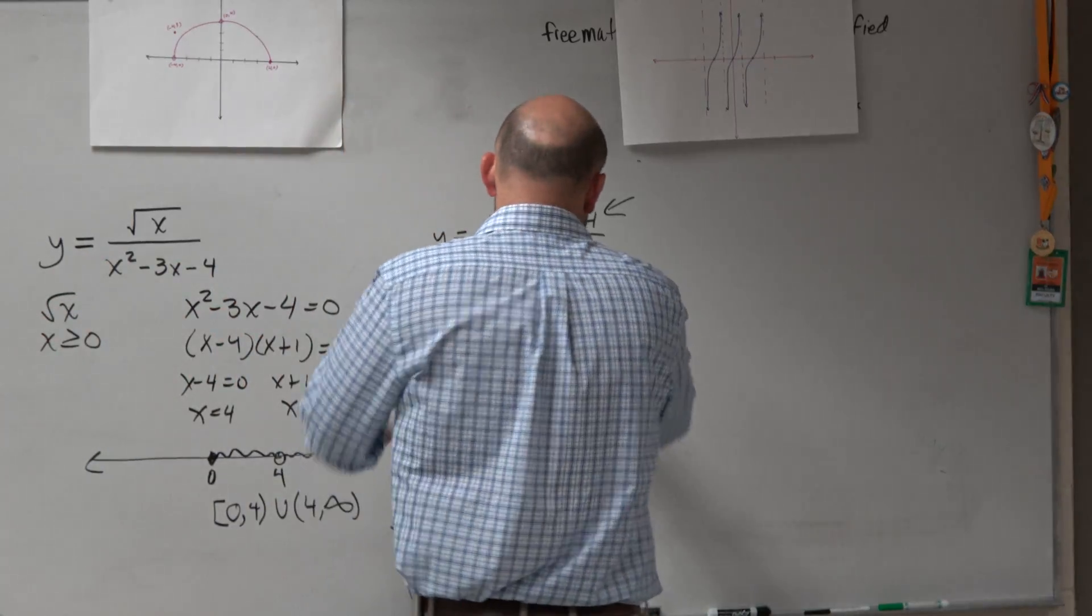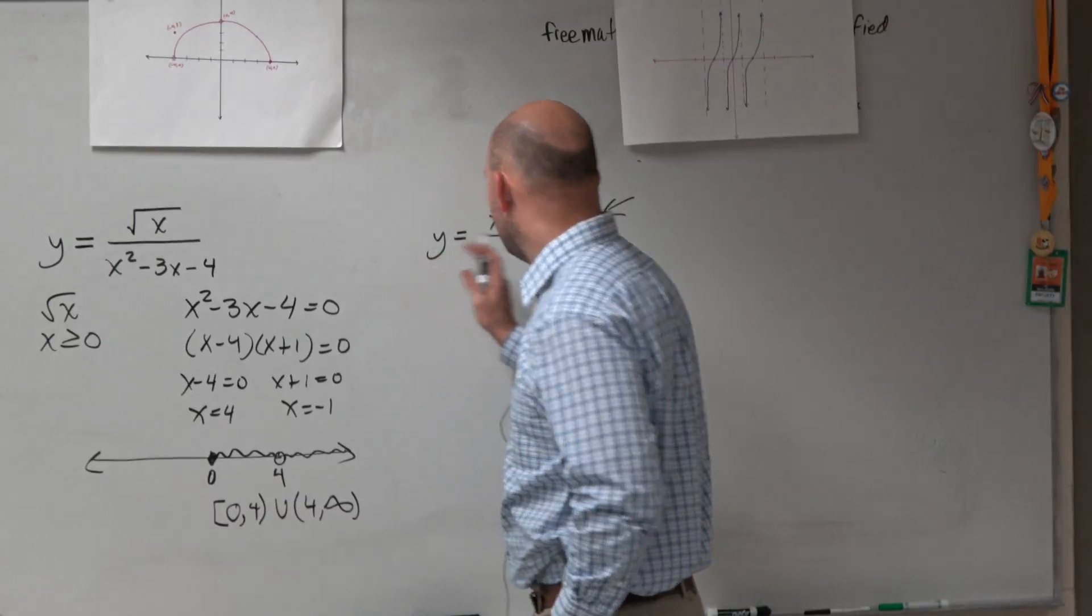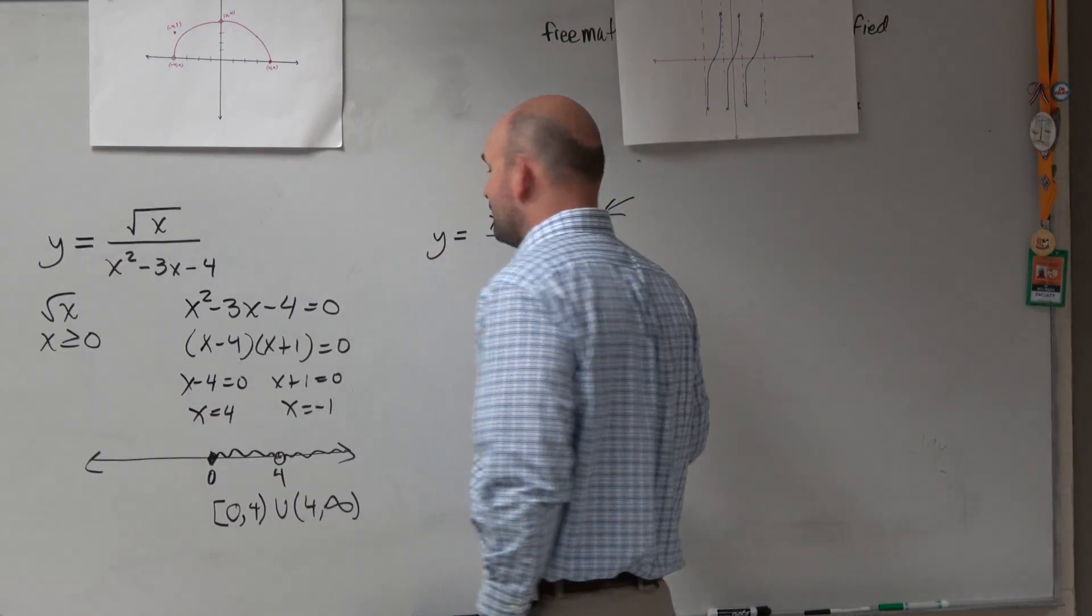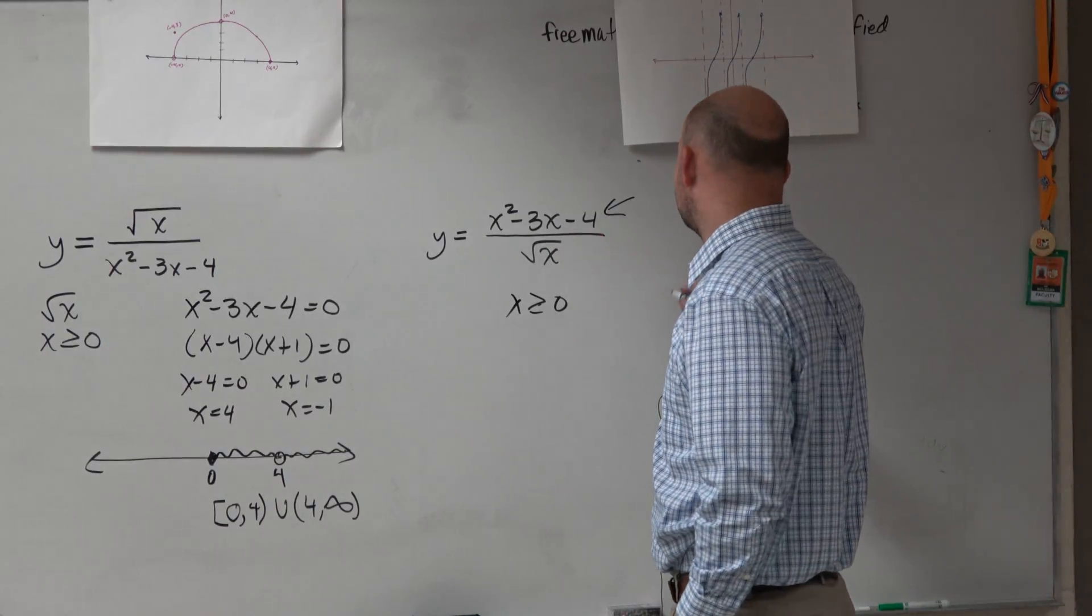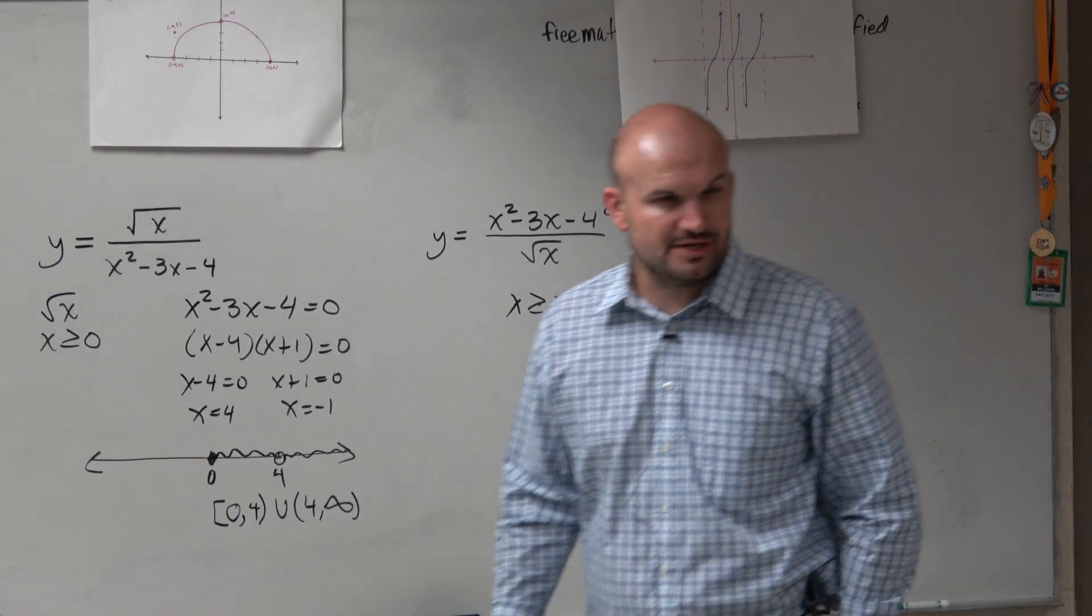No, we only care about what's in our denominator, right? So we say, OK, well, we know that the square root of x, that means x has to be greater than or equal to 0. However, we know that the denominator cannot equal 0. So we've got to find the values that make the denominator equal to 0.